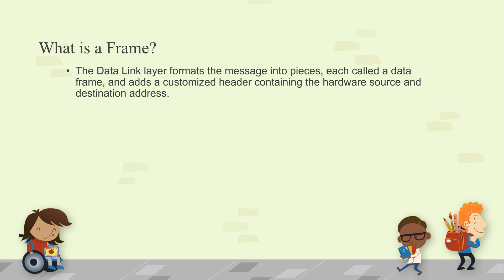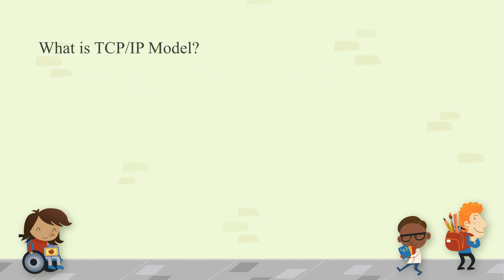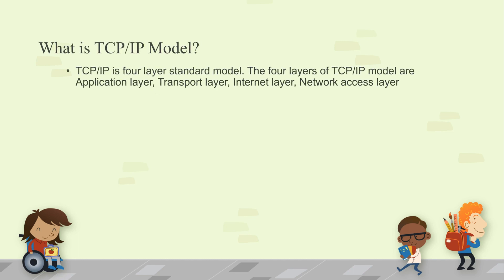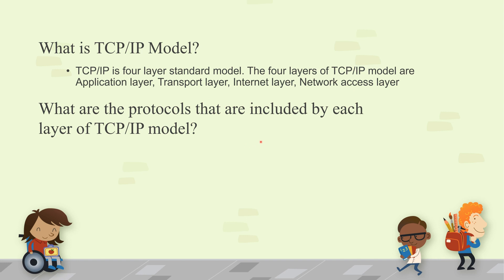What is the TCP/IP model? The TCP/IP model is similar to the OSI model, but instead of seven layers it has four layers. The Application layer, Session layer, and Presentation layer are merged into one — the Application layer. Then there is the Transport layer, the Internet layer (equivalent to the Network layer), and the Network Access layer, which combines the Data Link and Physical layers.